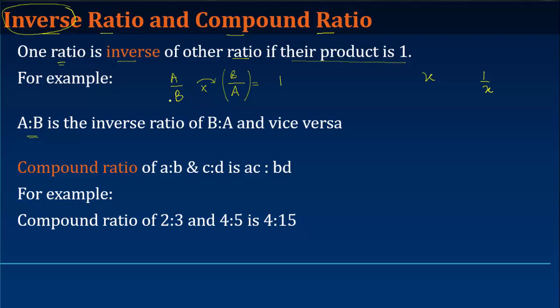Why? Because if I multiply this by B upon A, this B gets cancelled here, this A gets cancelled here. And you get 1, right?